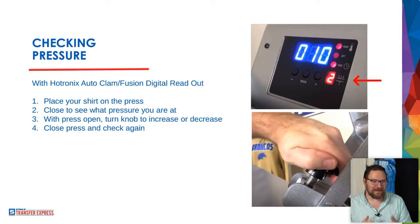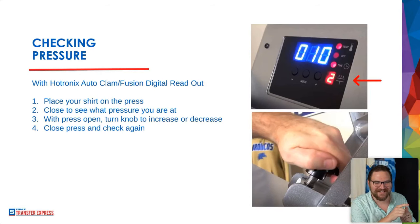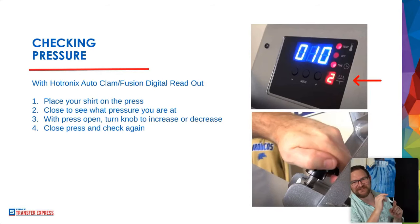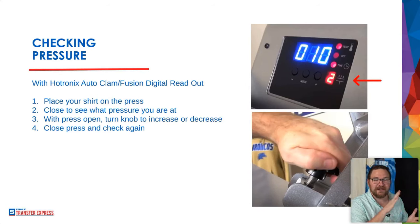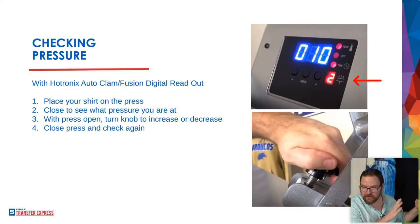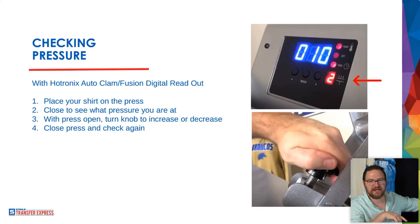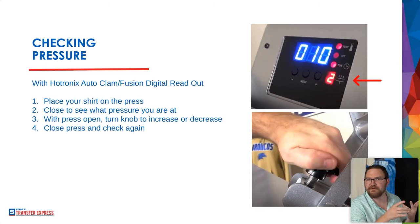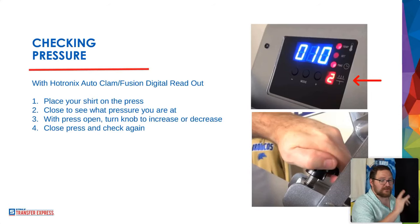Now we're talking about checking pressure. Checking pressure is a huge aspect of our heat pressing trinity. Time is fairly self-explanatory — even if your timer doesn't work, you can set an external timer or use a voice assistant. But pressure is the big one. What we see on screen is the Hotronix Auto Clam, which is exactly the press I have right here next to me.